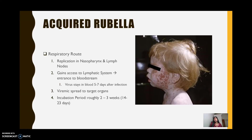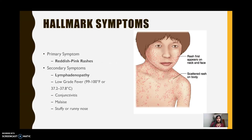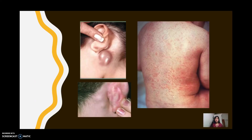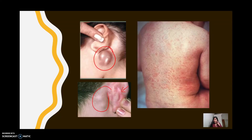The incubation period is roughly two to three weeks, meaning it takes that long for an infected person to start showing symptoms. Hallmark symptoms include reddish or pinkish rashes, which first appear behind the ears, around the neck, and on the face, then spread to the chest, arms, legs, and the rest of the body. Secondary symptoms include lymphadenopathy, low-grade fever, conjunctivitis (pink eye), malaise, and a stuffy or runny nose. Lymphadenopathy is just enlargement or swelling of the lymph nodes.